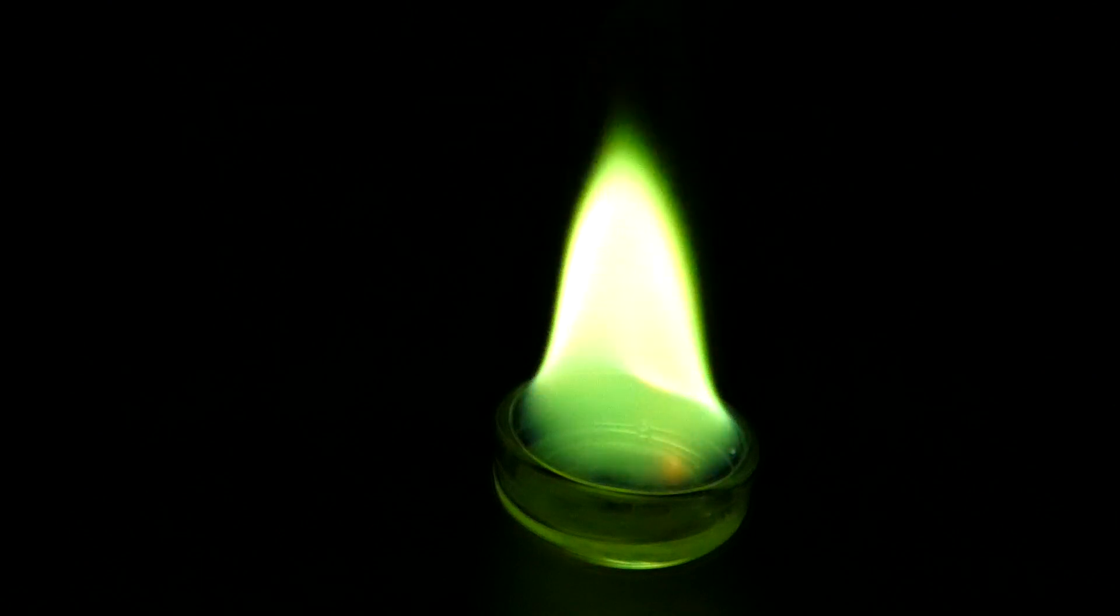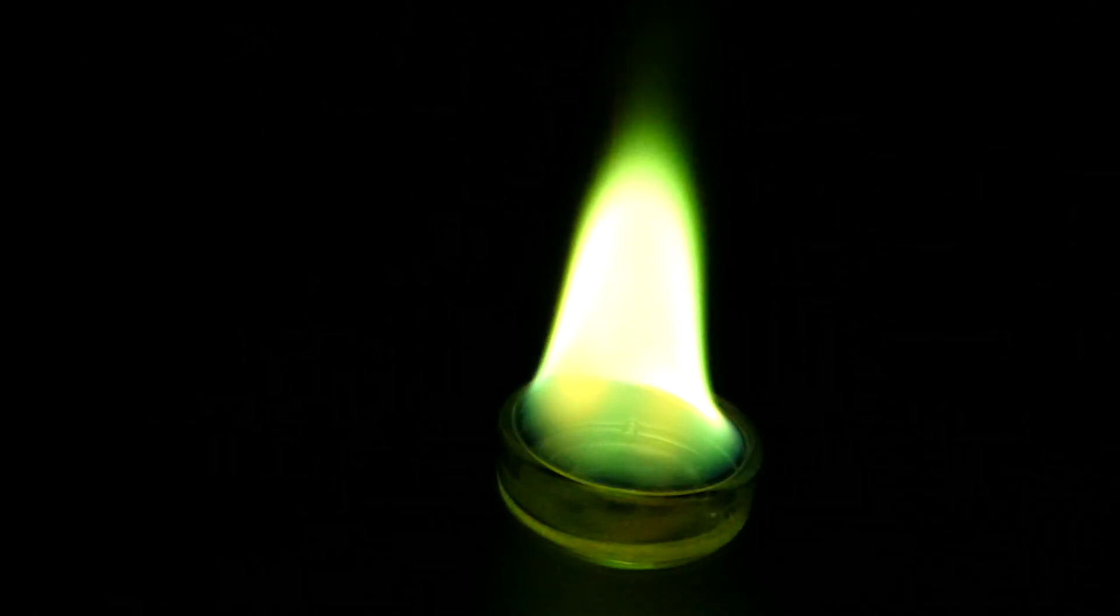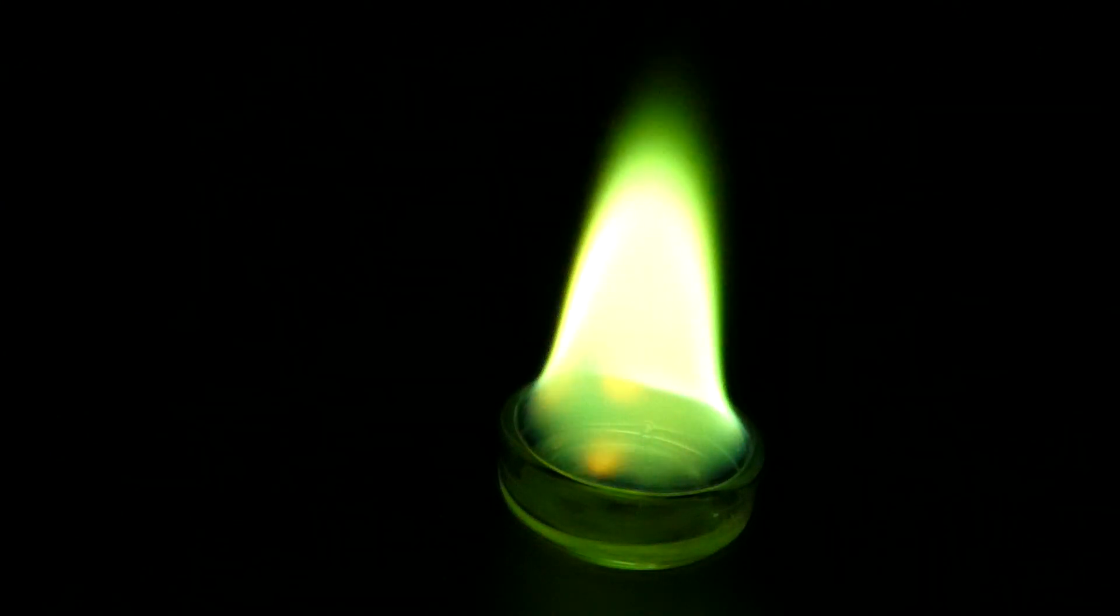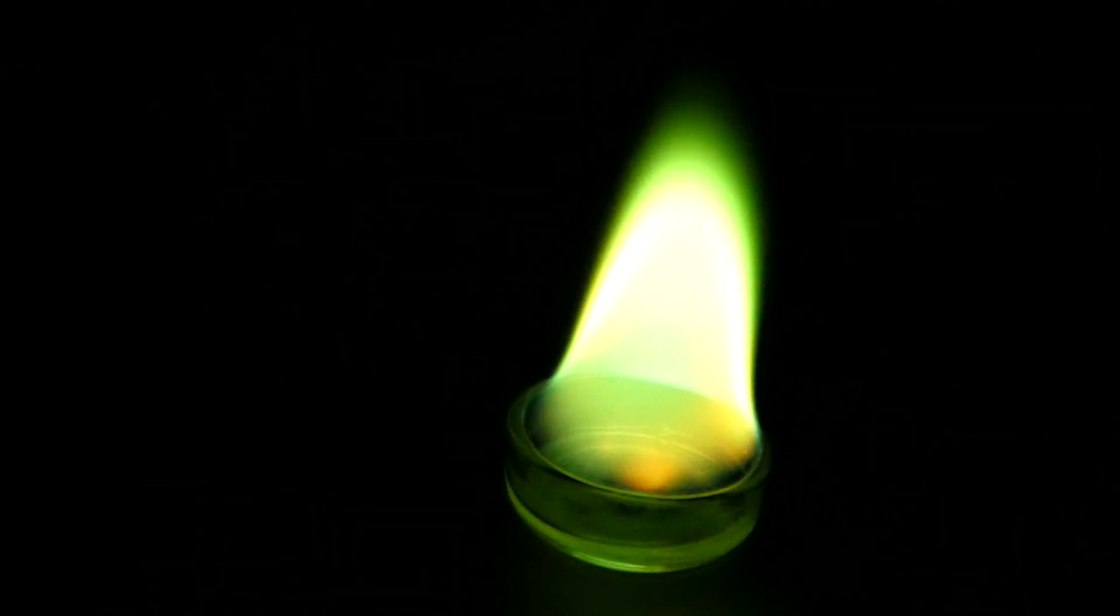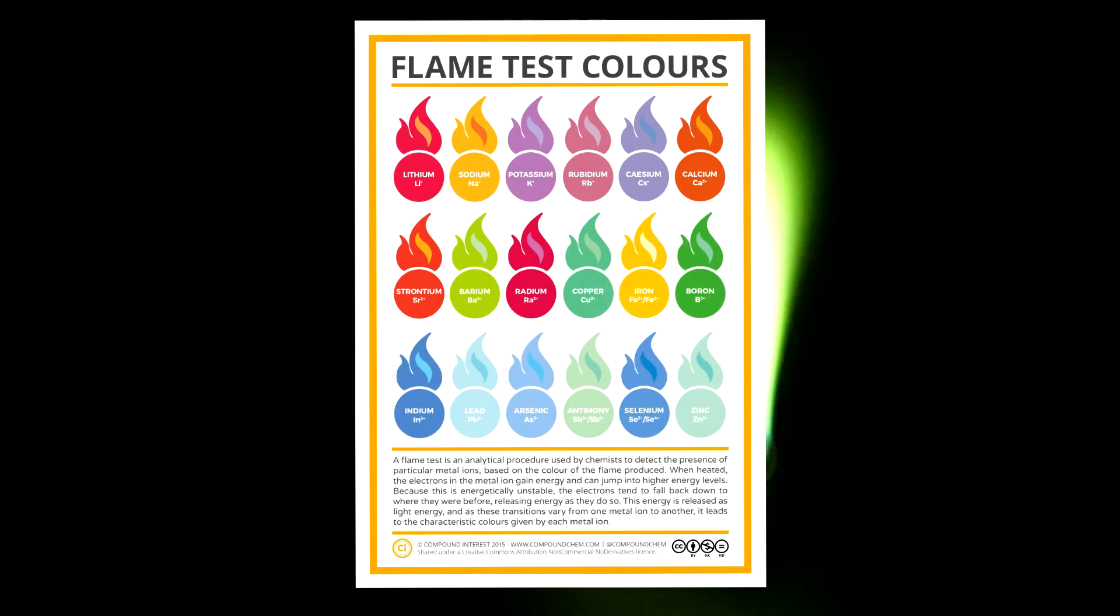So why was our flame green? Well that's because when certain metal ions are present in a flame they can give off lots of different colors. Here is a chart that can help you make your own colored flame.